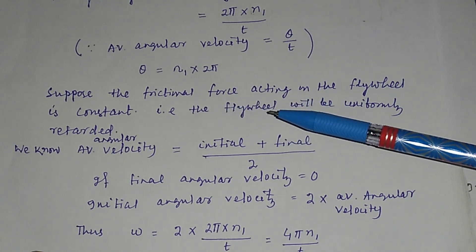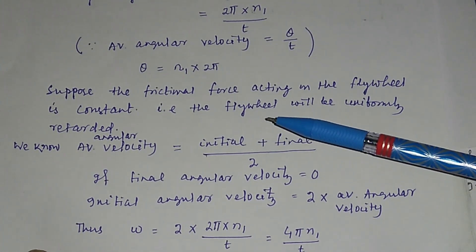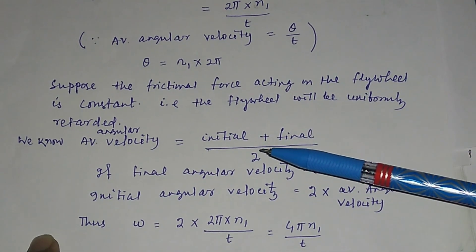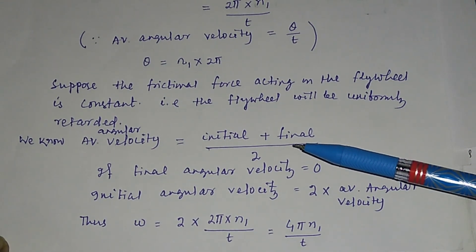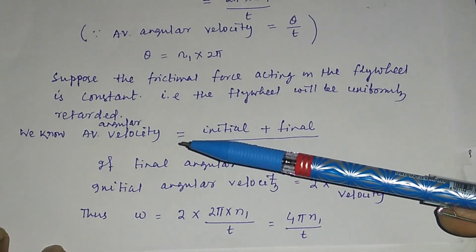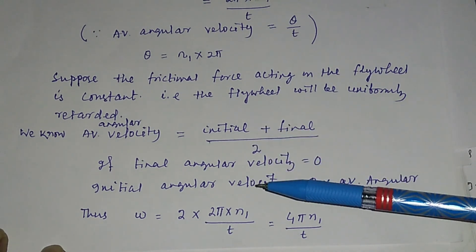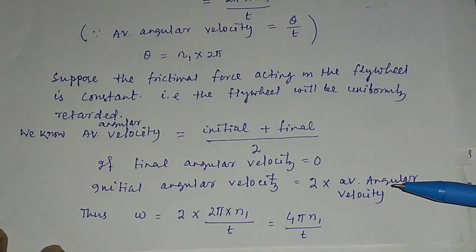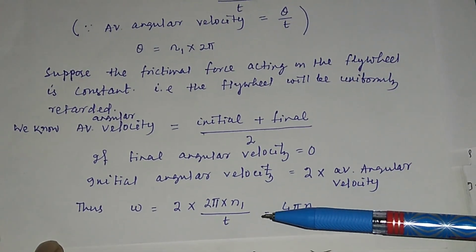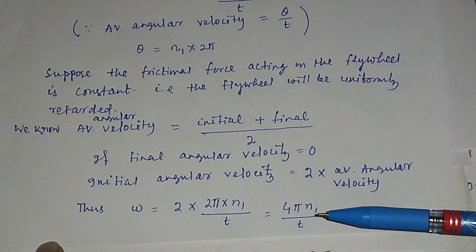With uniform retardation, the average angular velocity = (initial velocity + final velocity) / 2. Since the flywheel comes to rest, the final angular velocity is 0, so average angular velocity = initial angular velocity / 2. Therefore, initial angular velocity ω = 2 × average angular velocity = 2 × (2π × n1 / t) = 4π × n1 / t.